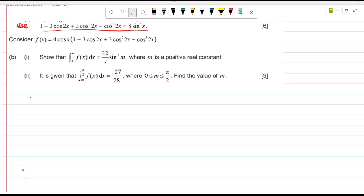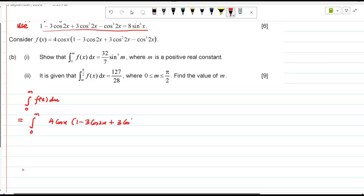So you are right what you have done is, the integral from 0 to m, fx dx, that is 0 to m, your fx is 4 cos x, 1 minus 3 cos 2x plus 3 cos square 2x minus cos cube 2x dx.